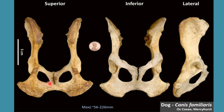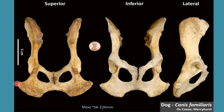The anterior border forms the posterior boundary of the obturator foramen. The posterior border of ischium is thick and forms the ischial arc with the adjacent bone. On the lateral aspect of this posterior border there is a tuberosity called ischial tuberosity, which is large and hook-like on its lateral aspect while rounded on its medial aspect.